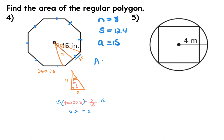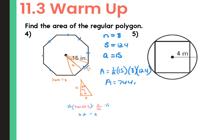Now we have all the information needed: one-half times a (which is 15) times n (which is 8) times s (which is 12.4). So 0.5 times 15 times 8 times 12.4 gives you 744 inches squared.